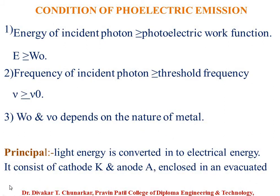Now I explain the photoelectric emission conditions. Number one: energy of incident photon greater than or equal to the photoelectric work function — E greater than or equal to w zero, where E is the energy of the photon and w zero is the work function. Number two: frequency of incident photon greater than or equal to threshold frequency — nu greater than or equal to nu zero. Number three: w zero and nu zero depend on the nature of the metal. Keep this in mind.